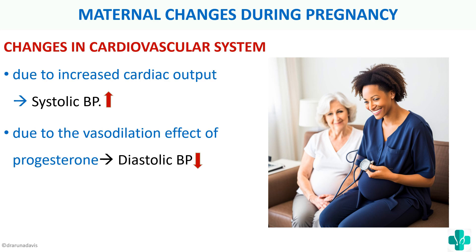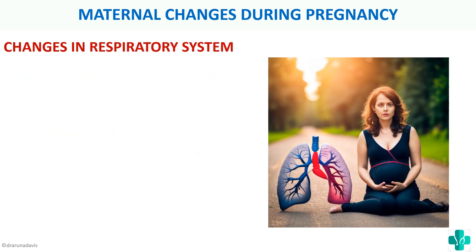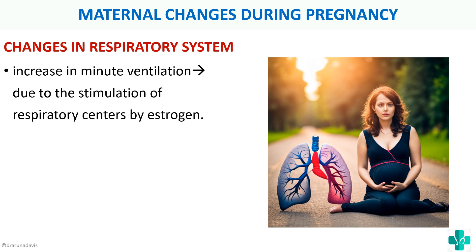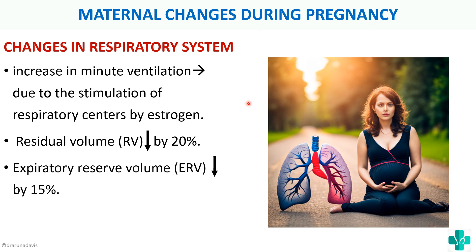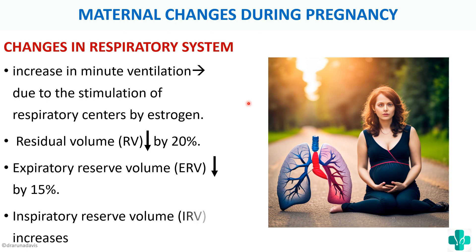In the respiratory system, there is an increase in minute ventilation due to stimulation of the respiratory centers by estrogen. The residual volume decreases by about 20%, the expiratory reserve volume decreases by about 15%, and the inspiratory reserve volume increases. So residual volume and expiratory reserve volume decrease, whereas inspiratory reserve volume increases.